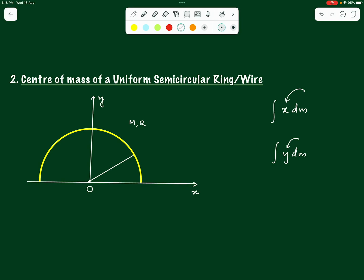We take a certain point on the ring which makes an angle theta with the x-axis. This is one point on the ring, obtained by moving in the anticlockwise direction by an angle theta. Then we further move by a small angle dθ and we get another point on the same half ring, so that this angle here is dθ — a very small angle.